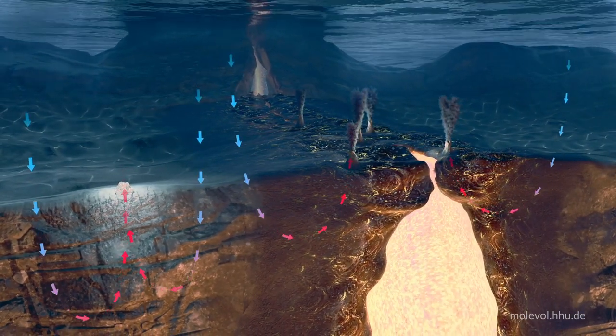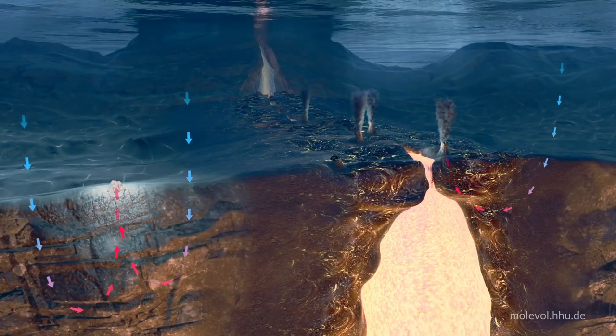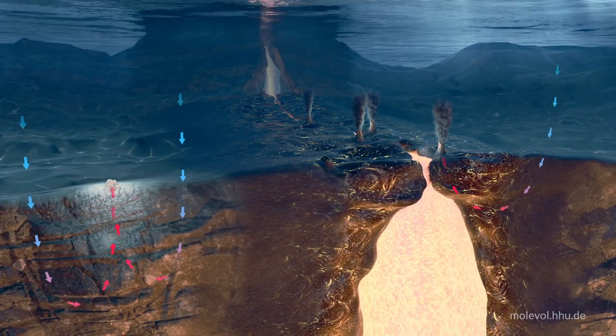With these initial conditions, a process called serpentinization takes place that is essential for origins. Serpentinization generates chemical energy in the form of hydrogen gas.